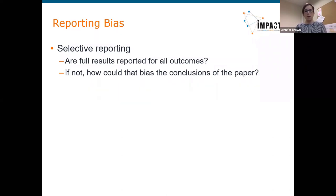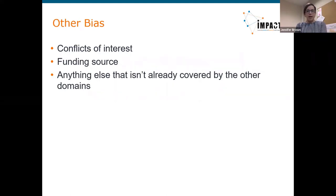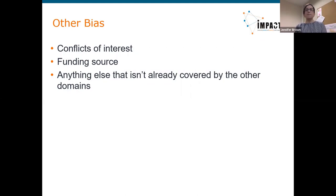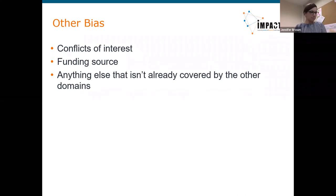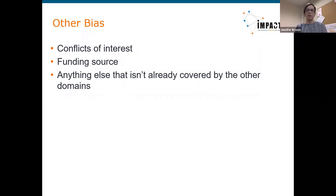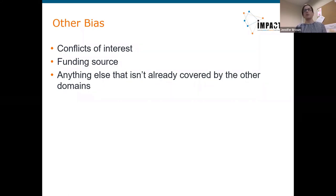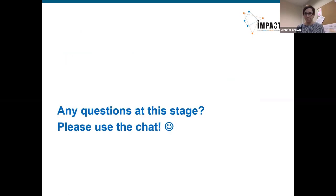Those five domains are comprehensive, but if anything isn't covered, there is the other bias catch-all category. For example, this can capture conflicts of interest — if all trial authors are heavily invested in the intervention, or if there are questions about who sponsored the trial and how involved the funder was in the trial conduct. Anything not already covered by the other domains can be reported here.